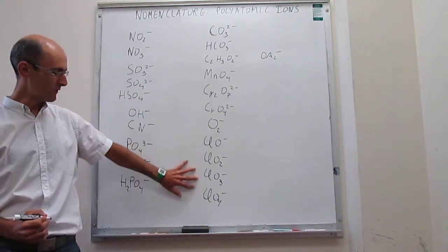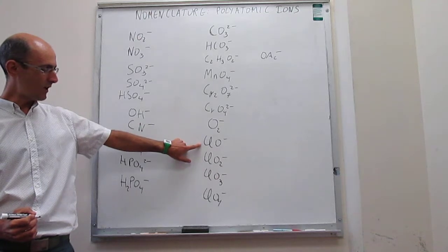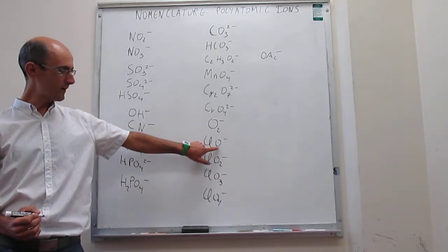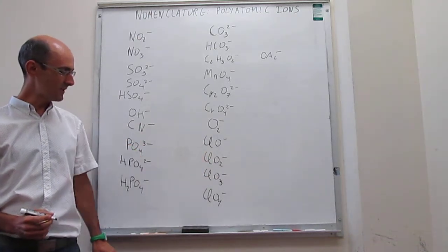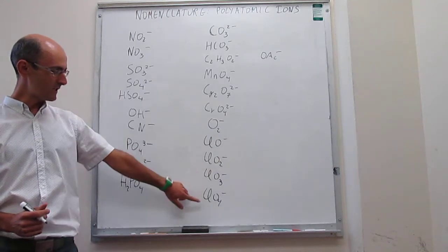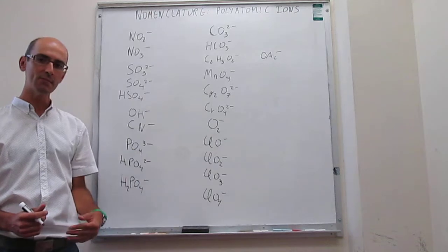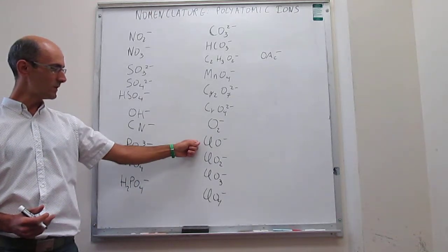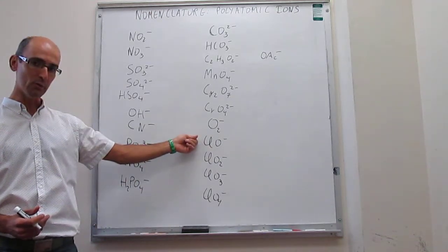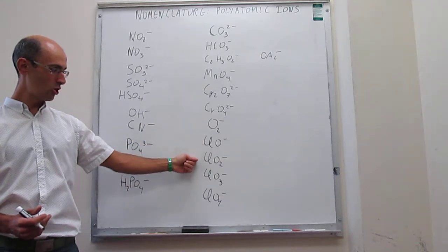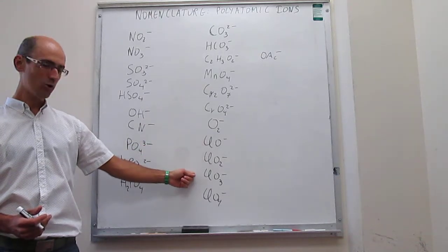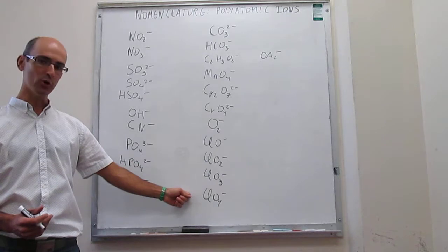So again, let's review these four. Notice that they are all compounds formed between chlorine and oxygen. The only difference here is the increasing number of oxygen atoms right here. The charge is always the same, and the naming is going to be hypochlorite, chlorite, chlorate, and perchlorate.